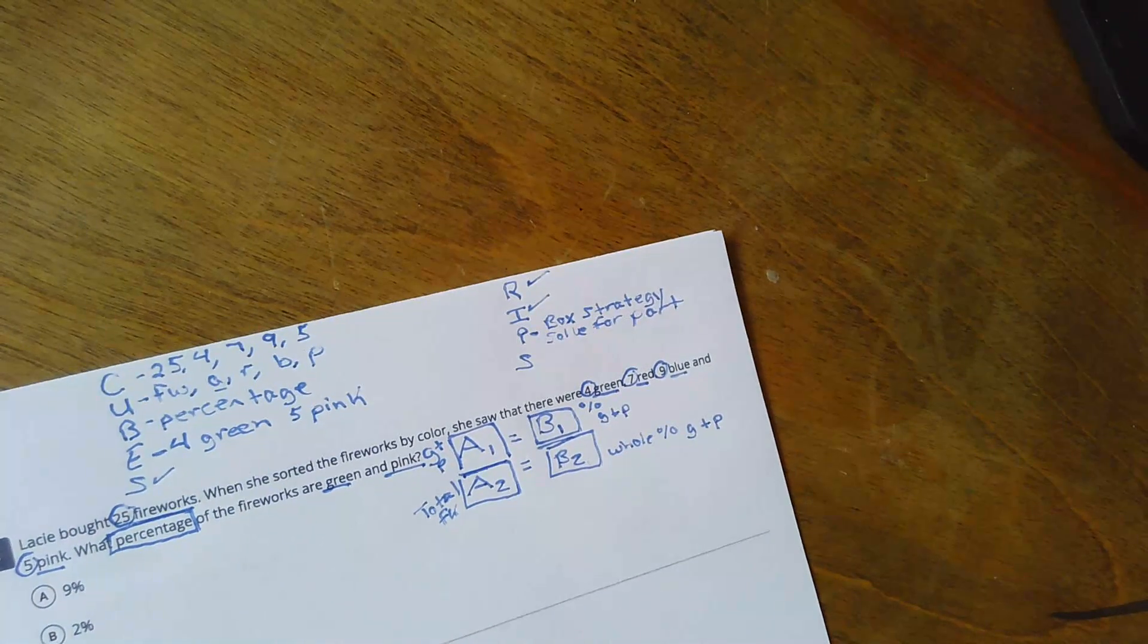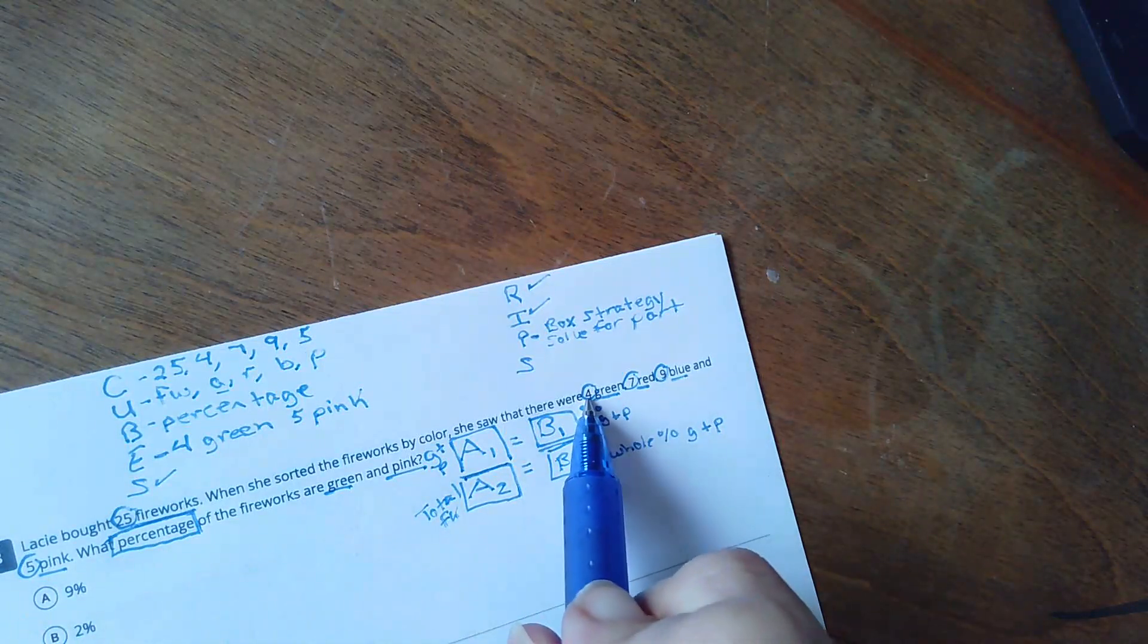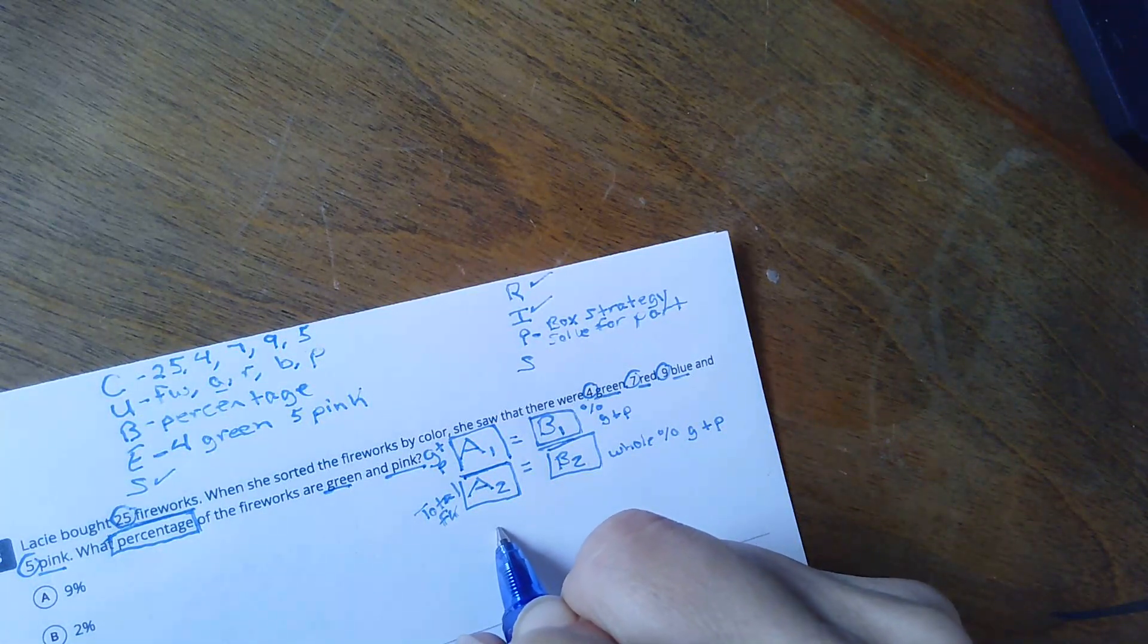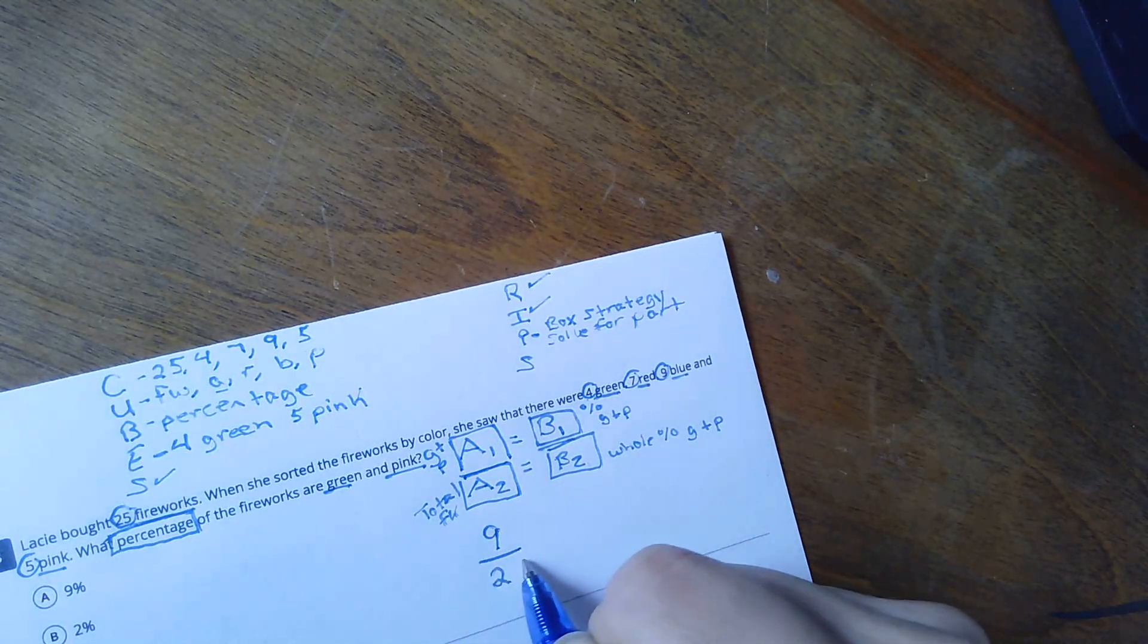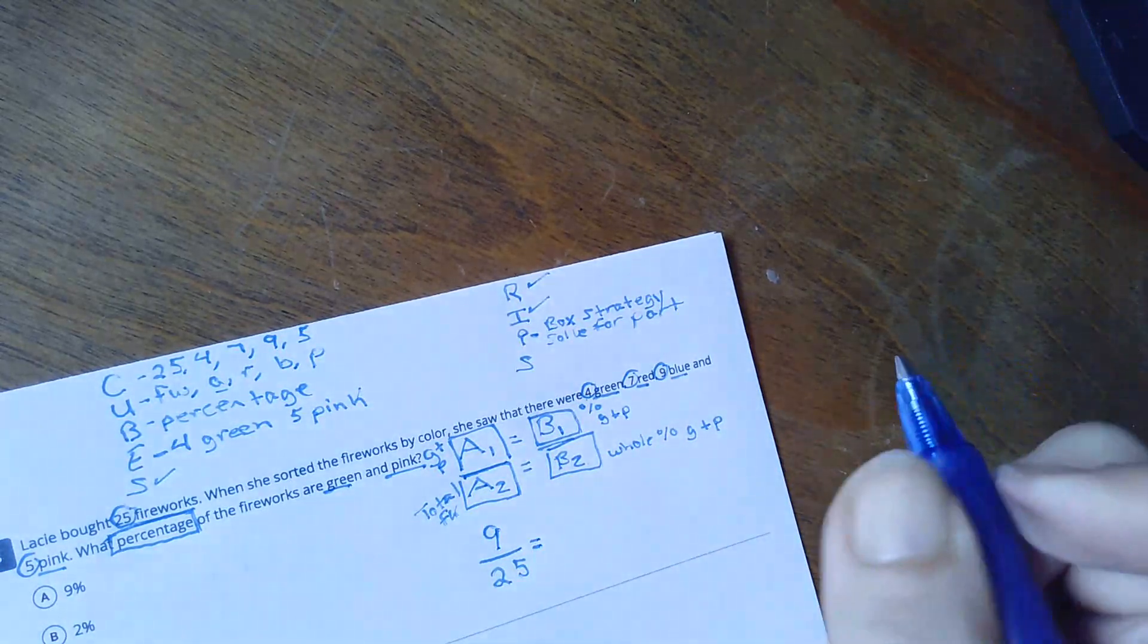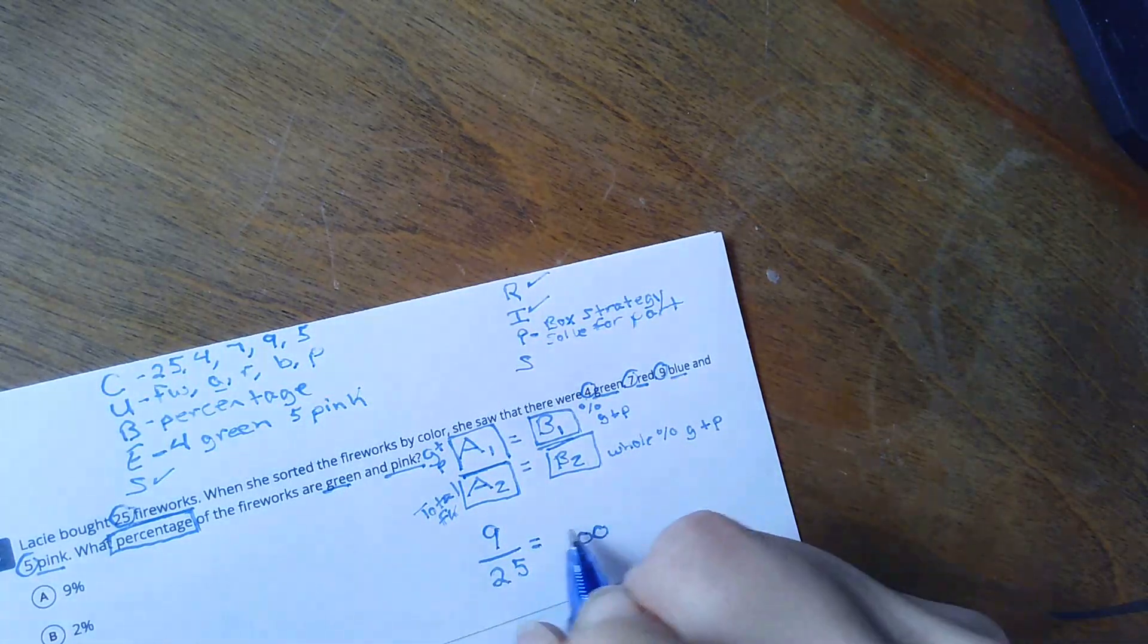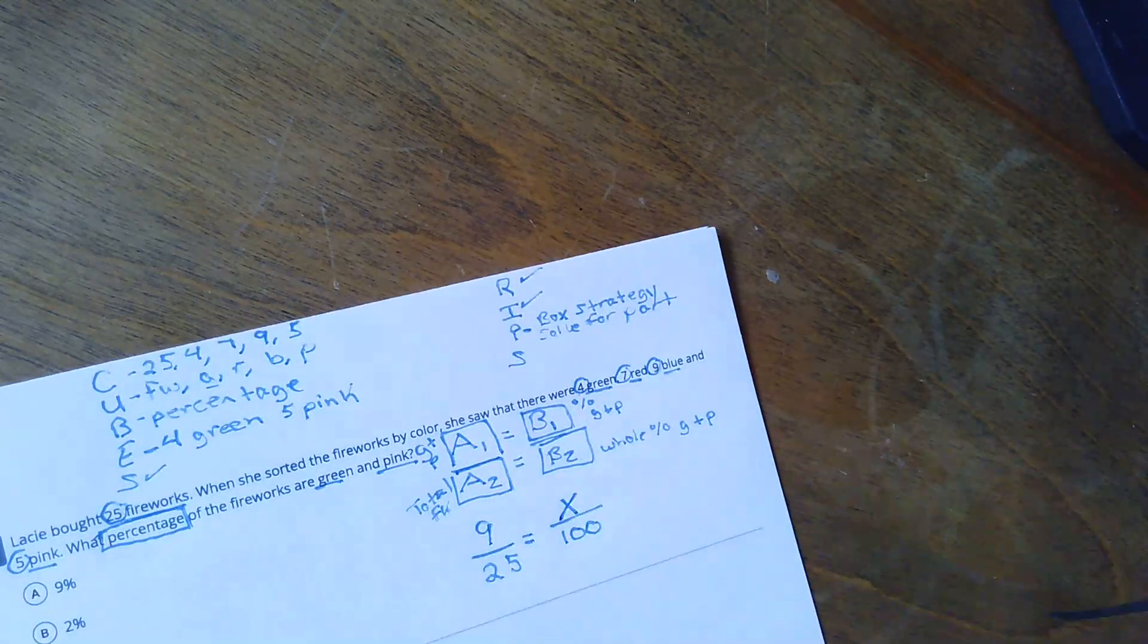So now I'm going to put in my numbers. Well, green and pink, that is four plus five is nine. Okay. And what is my whole? Well, my whole is 25. And my whole percent is 100. But what I don't know is my part percent.